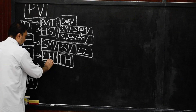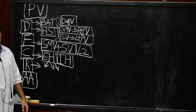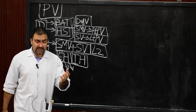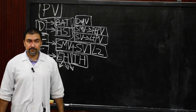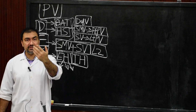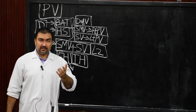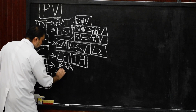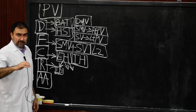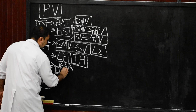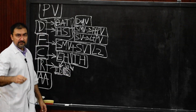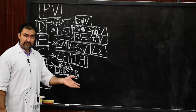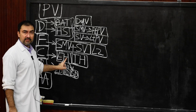The extra-hepatic course is divided into three segments by the first part of duodenum: infraduodenal (below), retroduodenal (behind), and supraduodenal (above the first part of duodenum). These three categories organize all the relations of the extra-hepatic course.